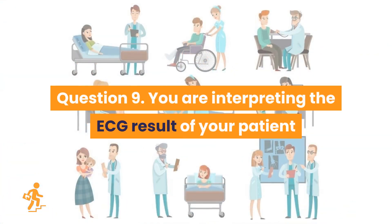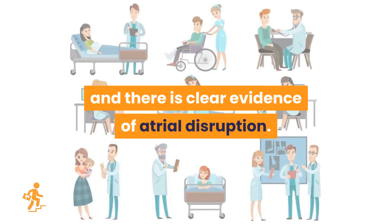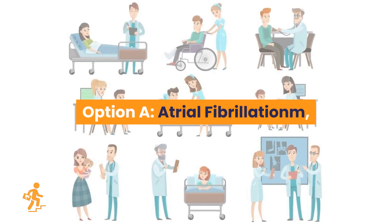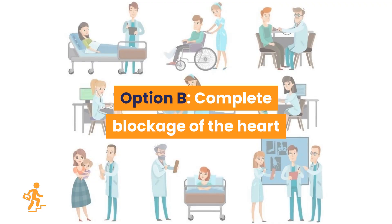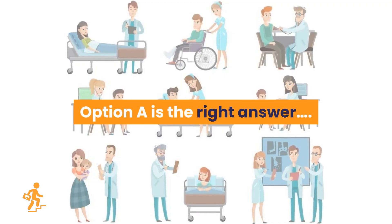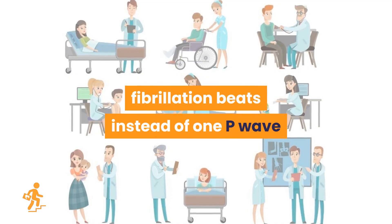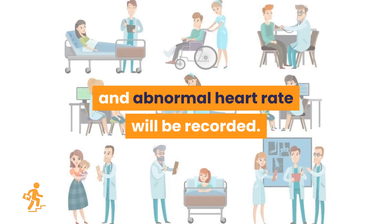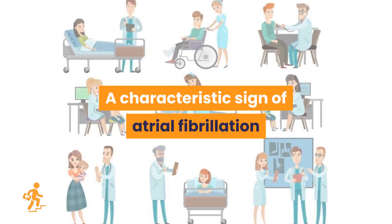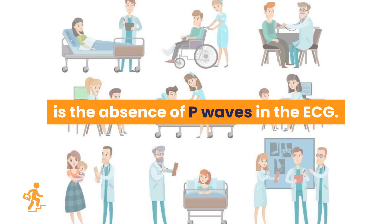Question 9. You are interpreting the ECG result of your patient, and there is clear evidence of atrial disruption. What does it indicate? Option A: Atrial fibrillation. Option B: Complete blockage of the heart. Option C: Cardiac arrest. Option D: Ventricular tach. Option A is the right answer: atrial fibrillation. In atrial fibrillation you will see many fibrillation beats instead of one P wave, and abnormal heart rate will be recorded. A characteristic sign is the absence of P waves in the ECG.